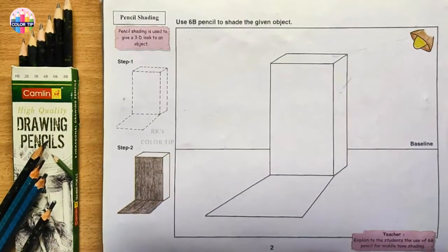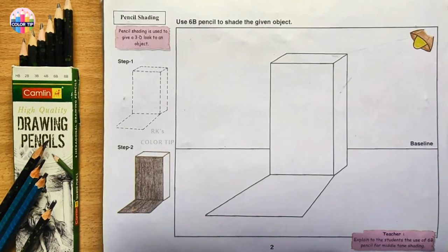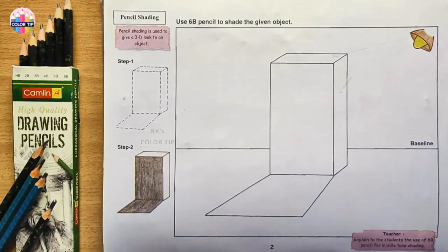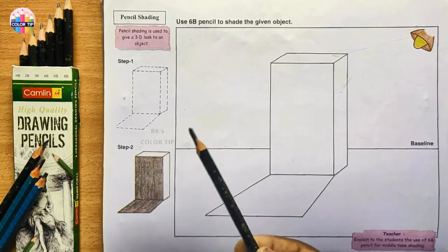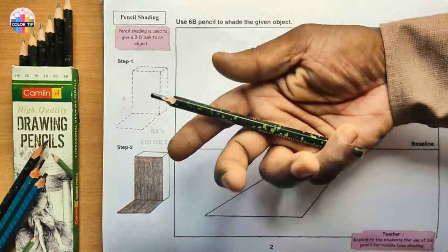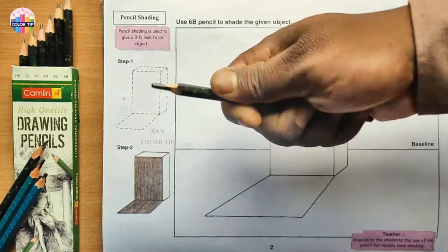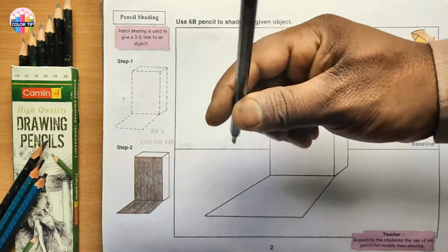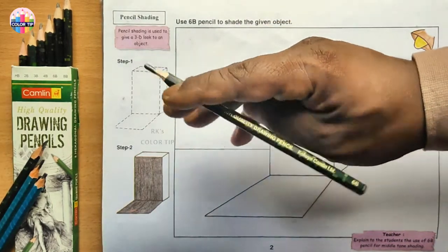Let's go on with shading. Use 6B pencil to shade the given object. I have different drawing pencils here, different grades of pencils. Let's take a 6B. I'm taking a 6B pencil. Keep your pencil in under palm position, not pen position. When you hold the pencil like this, it's called pen position. When you hold that pencil like this, it's called under palm position.